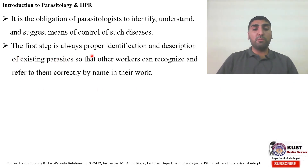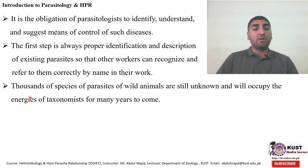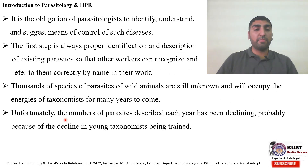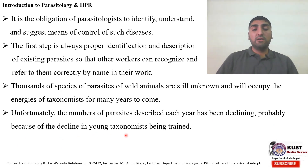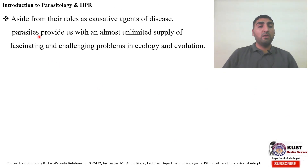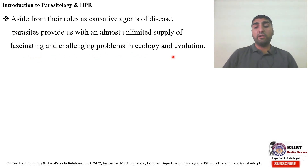It is the obligation of parasitologists to identify, understand, and suggest means of control of such diseases. The first step is always proper identification of the parasite and description of existing parasites so that other workers can recognize and refer to them correctly by name. Thousands of species of parasites of wild animals are still unknown and will occupy the energies of taxonomists for many years to come. Unfortunately, the number of parasites described each year has been declining, probably because of the decline in young taxonomists being trained. Aside from their role as causative agents of disease, parasites provide us with an almost unlimited supply of fascinating and challenging problems in ecology and evolution.